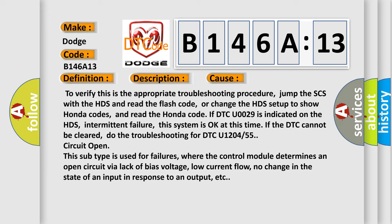This subtype is used for failures where the control module determines an open circuit via lack of bias voltage, low current flow, no change in the state of an input in response to an output, etc.